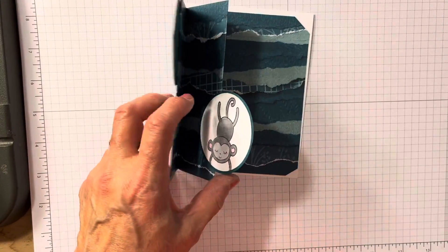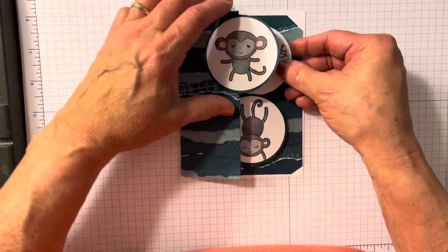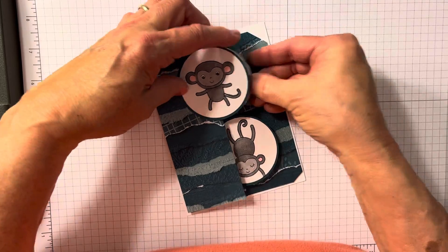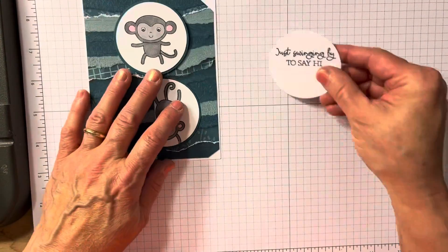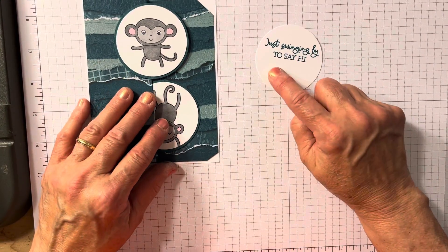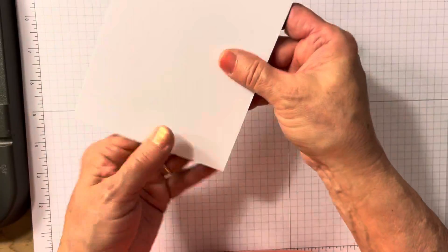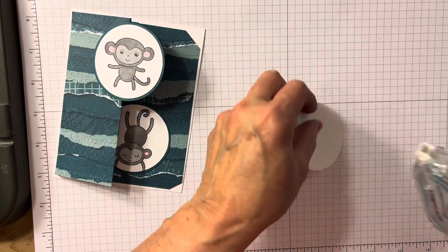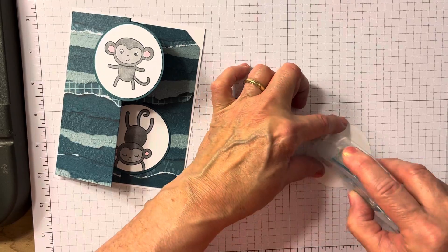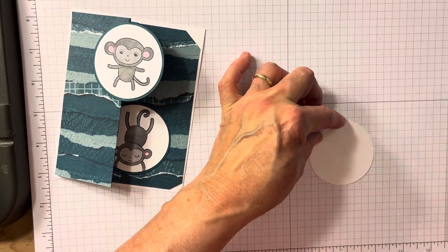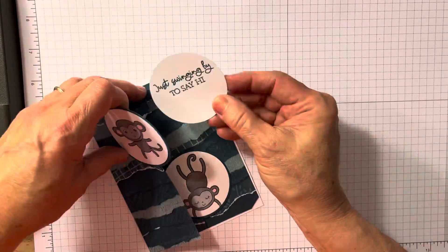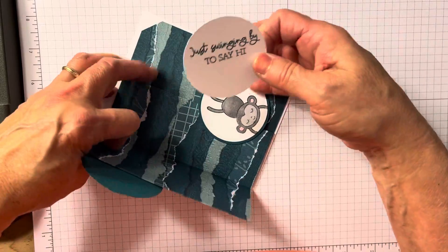And then the only other thing I'm going to do, how am I going to adhere this? I already stamped just swinging by to say hi, and I left a little space to write, but you could always write in the back. And I'm going to put a little adhesive on it. And here's a trick.